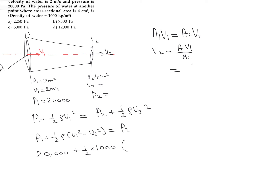The value of A1 is 12, V1 is 2, and A2 is 4. So V2 equals 12 times 2 divided by 4, which gives 3 times 2, equal to 6. Therefore, the velocity at the second point is 6 meter per second.